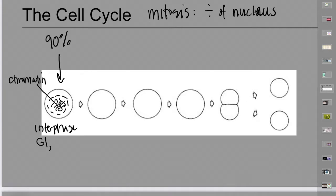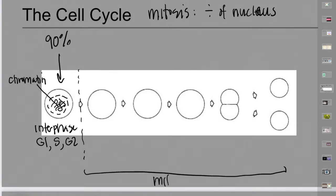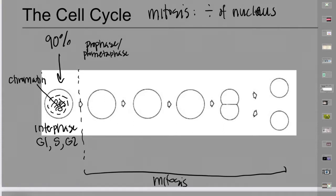In interphase, I'll draw the nucleus big — we have the nuclear envelope and inside it the relaxed chromatin, which are linear chromosomes not yet condensed. This is interphase — the genetic material is chromatin. During interphase we have G1, then chromosomes are replicated during S phase, then G2. The beginning of mitosis is where we have nuclear division.